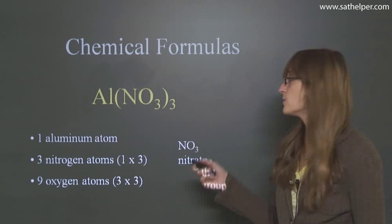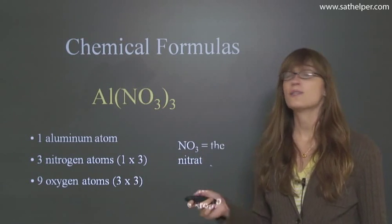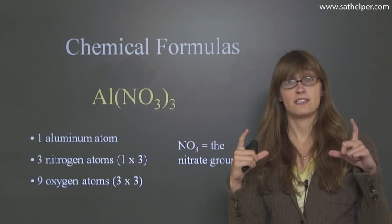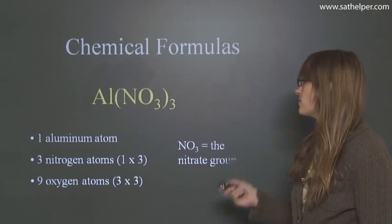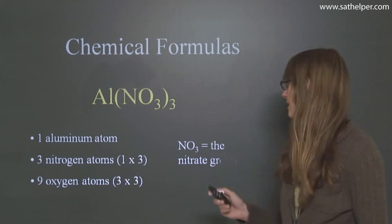And finally, with the oxygen atoms, we see here that there are 3 oxygen atoms in the ion, but we have to multiply it by 3 because there are 3 NO3 ions in the entire compound. So 3 times 3 is 9, so we have 9 oxygen atoms.